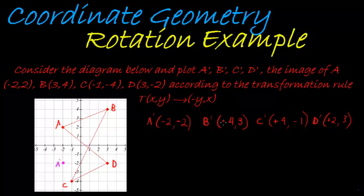Now let's look at B'. B' is at (-4,3), that is my B'. Then C' is (4,-1), there's my C'. And D' is (2,3), that's my D' coordinate.